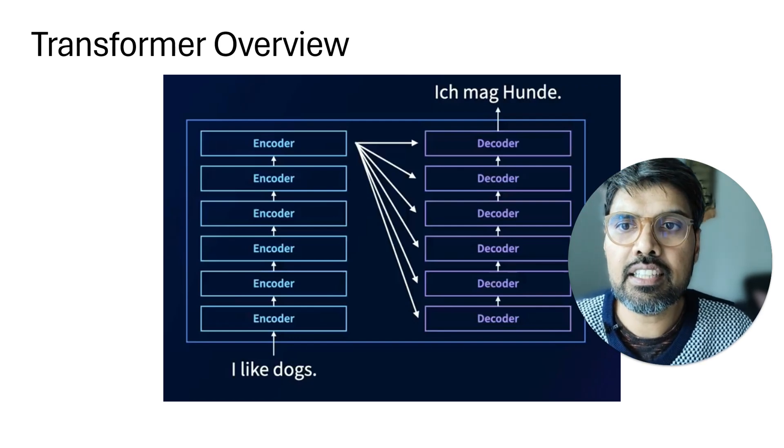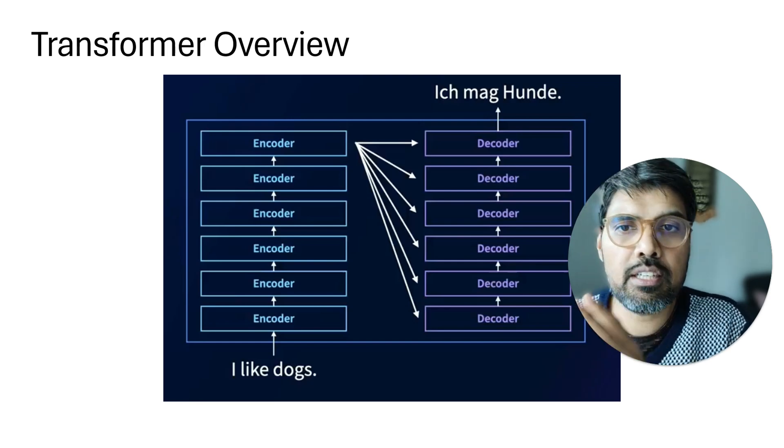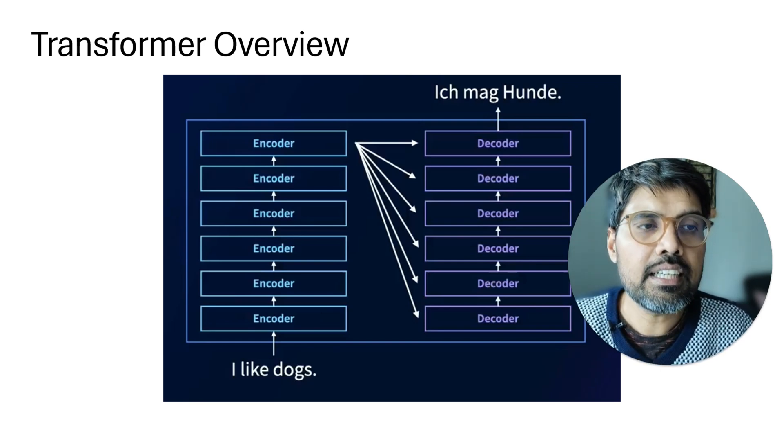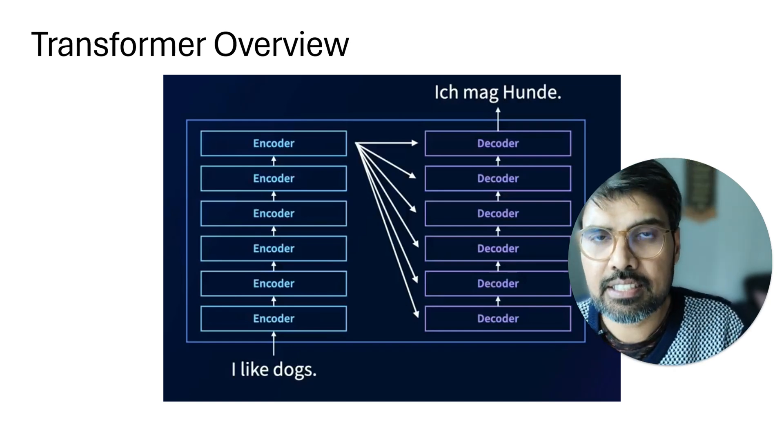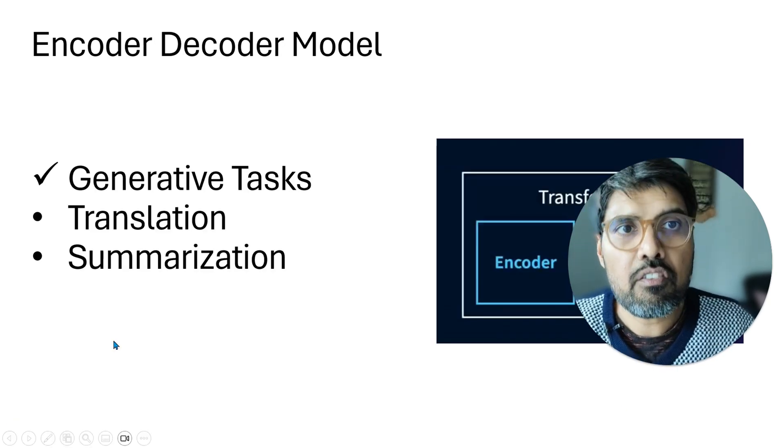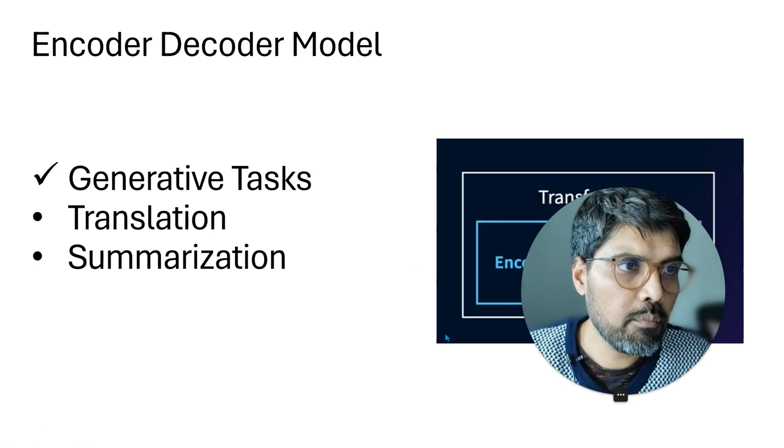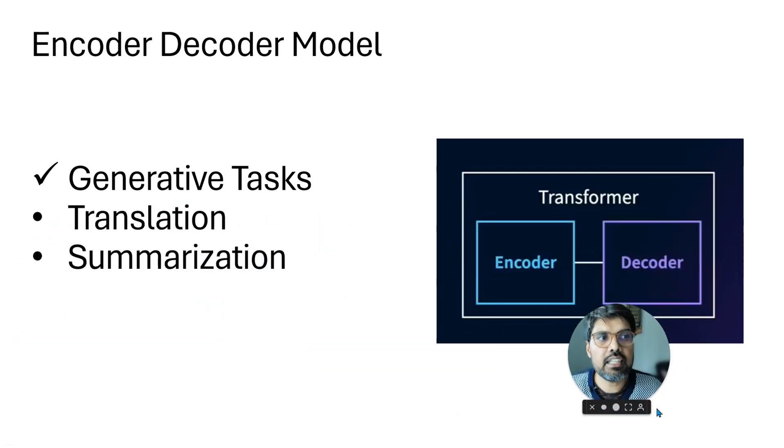The encoder and decoder can be used independently or together depending on the task. When they work together, they're used for tasks like translation—converting English to German—or summarization, because you need both understanding and generation.